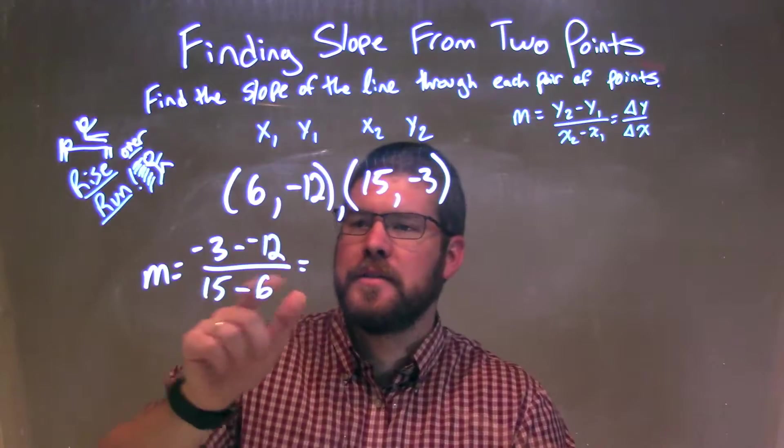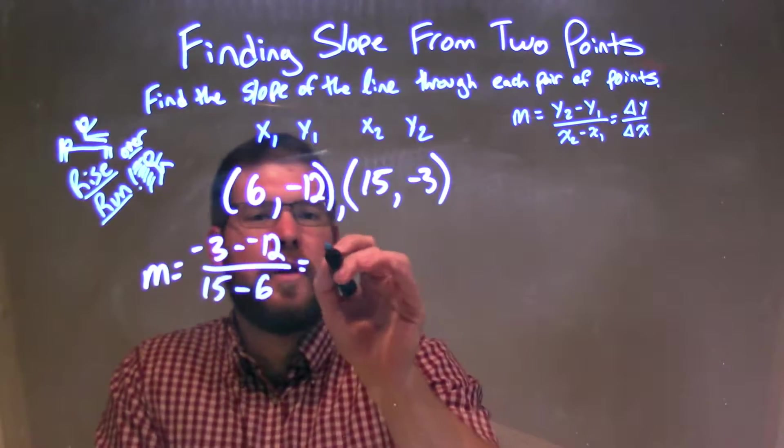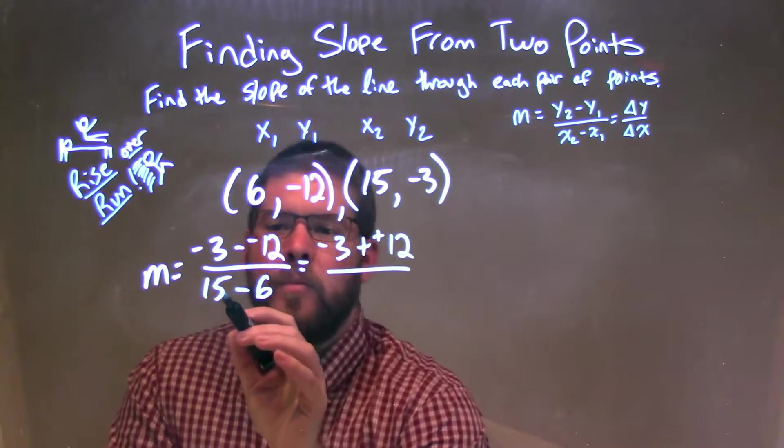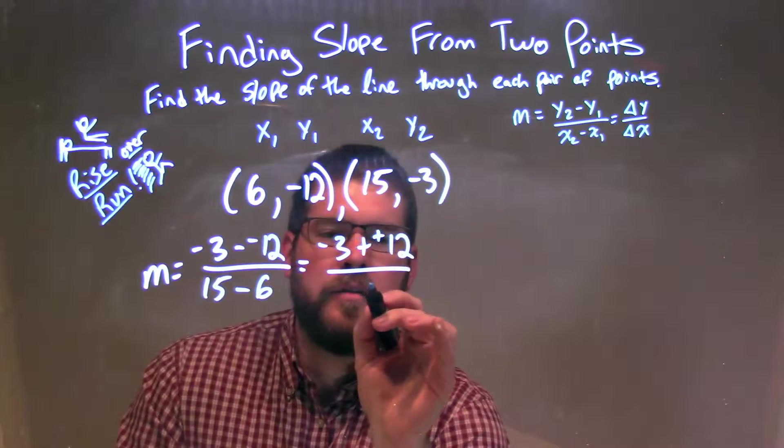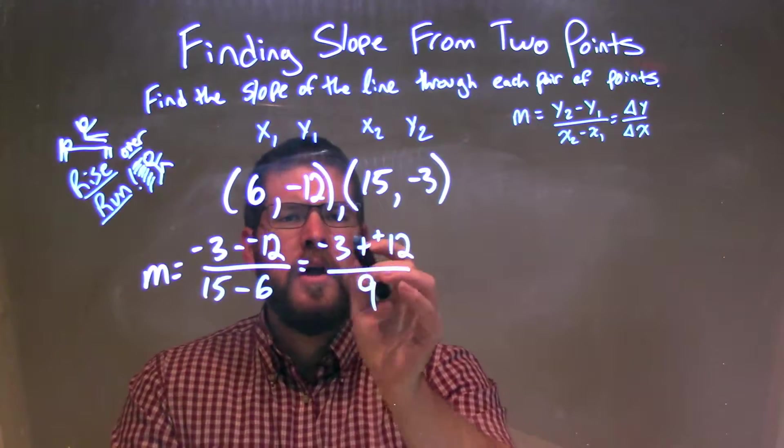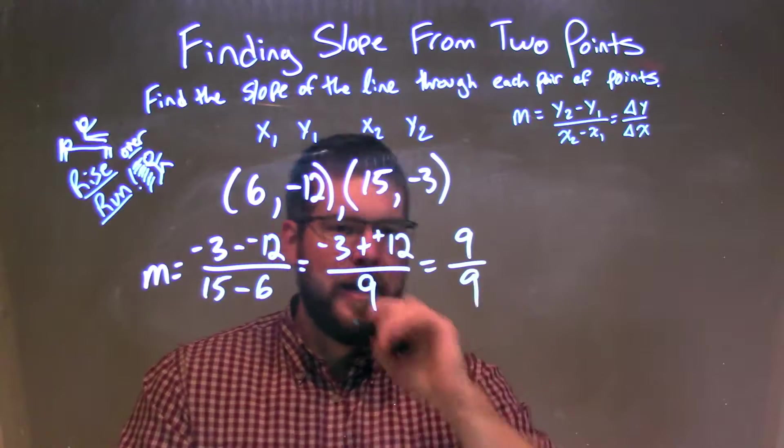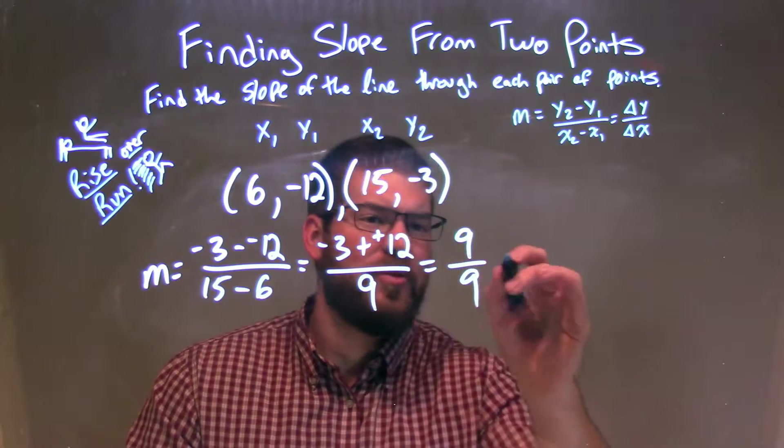Well, I'm going to rewrite my numerator instead of subtracting negative 12 to be adding a positive 12, so negative 3 plus 12. And my denominator, 15 minus 6 is fairly easy, it's just 9. Well, negative 3 plus 12 is 9, so we have positive 9 over 9, and 9 over 9 is just 1.